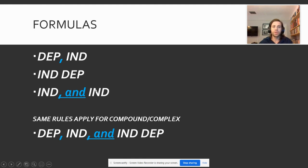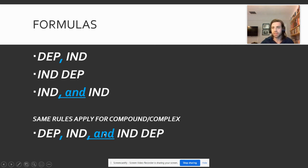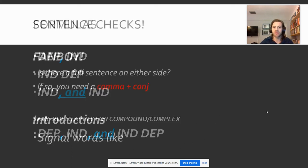If you have two independent clauses, you need a comma and a conjunction. And then you can mix those together in any way you see fit — dependent, independent, comma, conjunction, independent, dependent. This is just one big long complex sentence that you've strung together with different types of clauses.